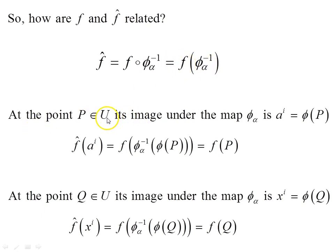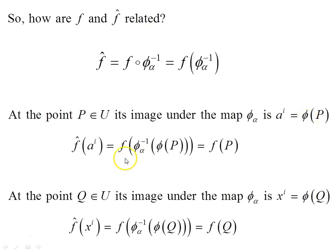Now, at the point p belonging to U_alpha, its image under the map phi_alpha is the point a_i equals phi_alpha of p. Evaluating f-hat at that point: a_i is the image of p under phi_alpha, which gives us f of phi_alpha inverse of phi_alpha of p, and that gives us simply f of p — the forward and inverse maps cancel. So f-hat evaluated at the point a_i is the same as f evaluated at the point p. These two things are equal.